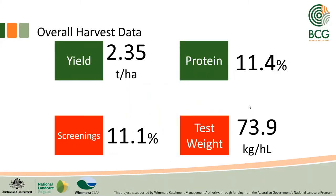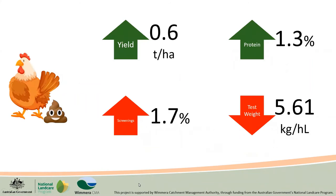What we saw was that in the tight spring finish with the low water holding capacity, the crop hayed off quite badly — we had screenings of 11% and a test weight of 74, both of which are outside the thresholds needed to make most grain grades.